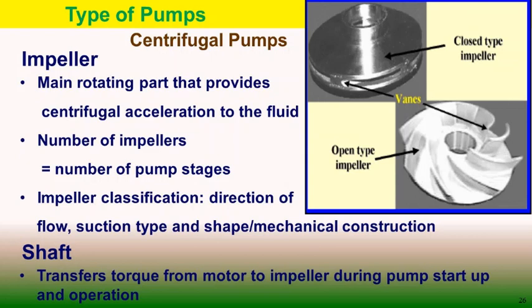The impeller is a circular metallic disc with built-in passages for fluid flow. Impellers are generally made of bronze, cast iron, stainless steel, or sometimes polycarbonate materials for anti-corrosive use. The number of impellers in a system is determined by the number of stages. A single-stage pump has one impeller and may have single or double suction arrangement for low head. For multiple stages, the number of impellers equals the number of stages.